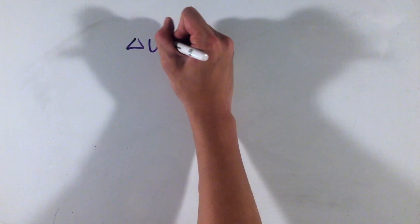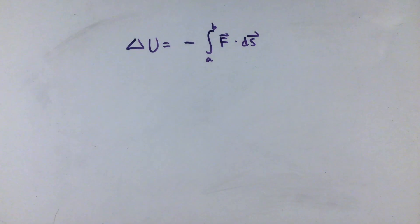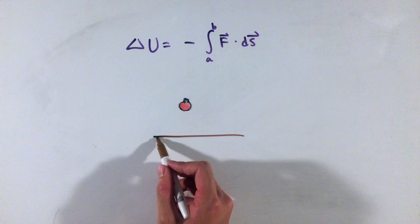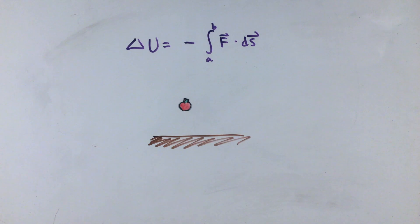For conservative forces, specifically for force fields such as gravitational, electric, and magnetic fields, there is a potential energy function for these forces equal to the negative of the integral of the force and distance.